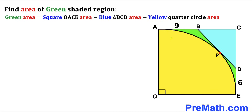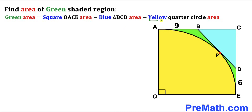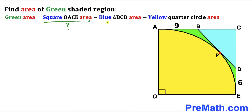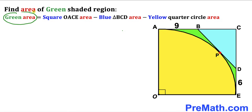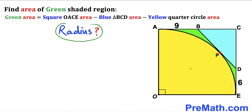The green region area equals the area of square OACE minus the area of blue triangle BCD minus the area of the yellow quarter circle. To perform these calculations, we must first figure out the radius of this quarter circle.